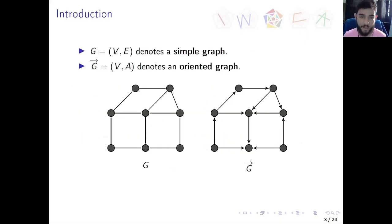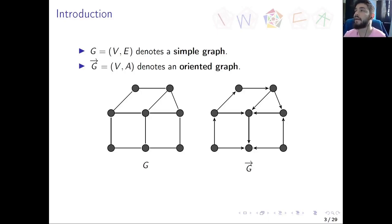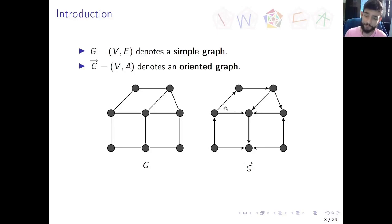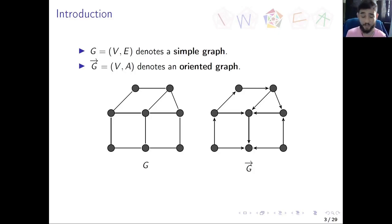We say that a graph is a simple graph when we don't have two different edges that have the same two vertices on both ends, and we don't have an edge with the same vertex on both sides. An oriented graph is an orientation of a simple graph — we define a direction for each edge. We call G-arrow the oriented version of G, and G the underlying graph of G-arrow.